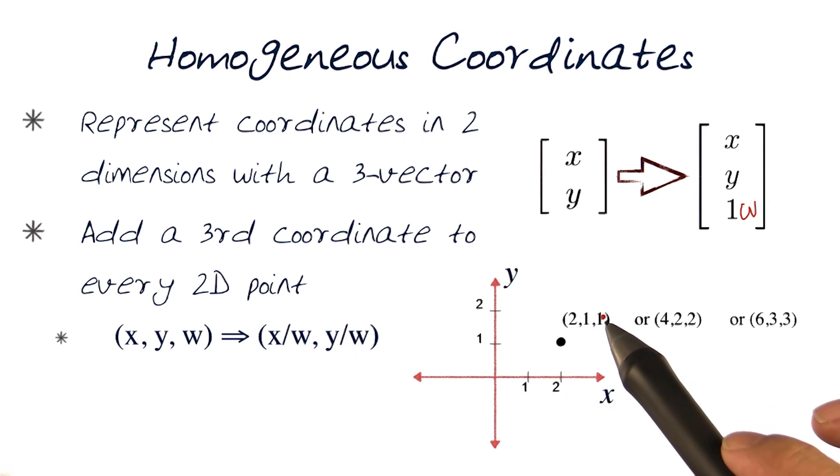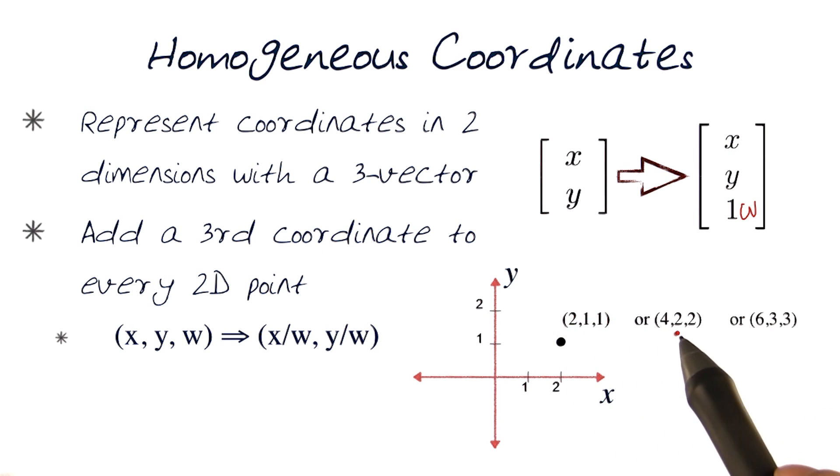Now keeping this convention in mind, if I had omega or w to be one, this still makes reasonable sense - two, one, one applies. But if I convert w to two, then four, two, two applies.